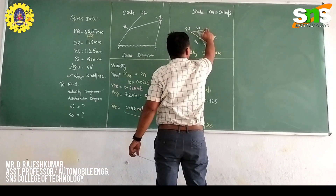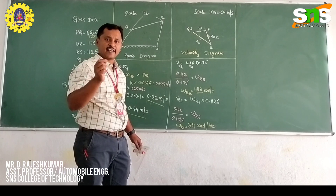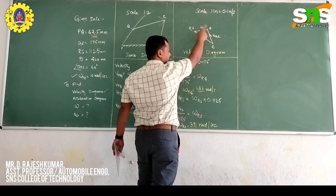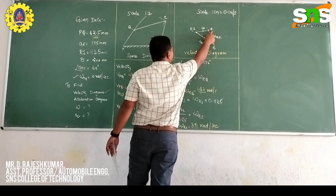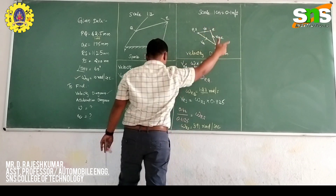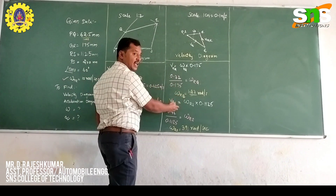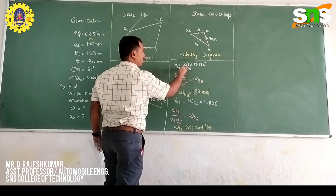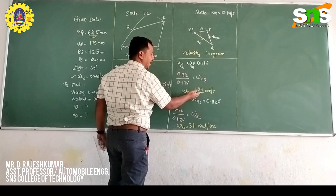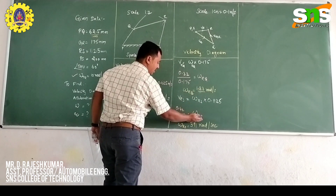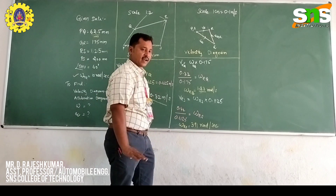From the starting point, construct a perpendicular line at R. The velocity diagram takes a triangular shape. Measure each line and convert using the scale to obtain velocity values. The angular velocity formula is: ω = velocity ÷ length of link. Angular velocity of link QR = 1.83 rad/s, and angular velocity of RS = 3.91 rad/s.